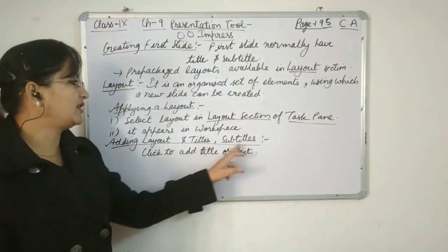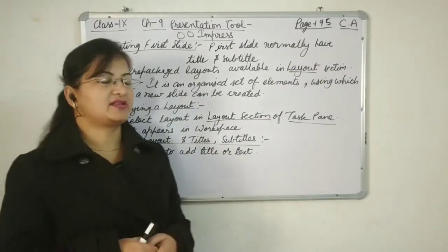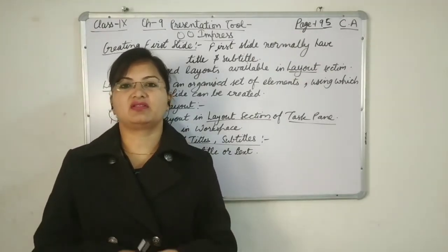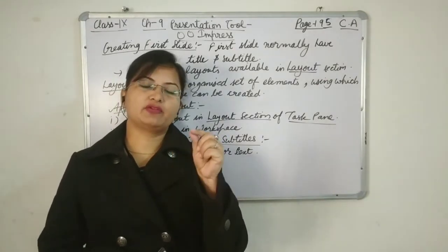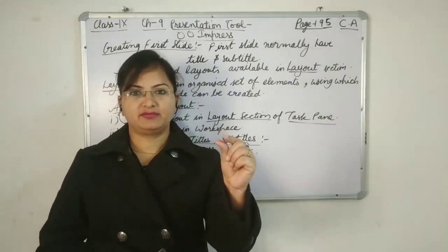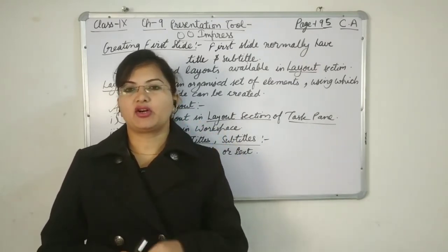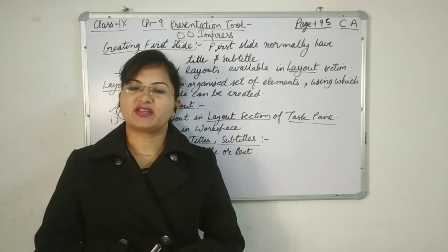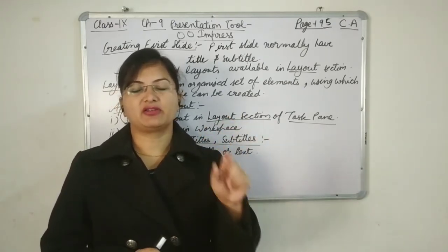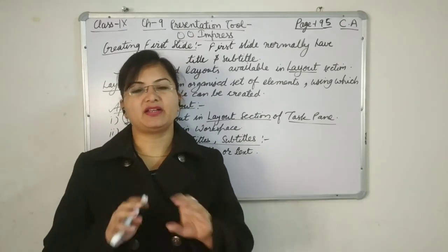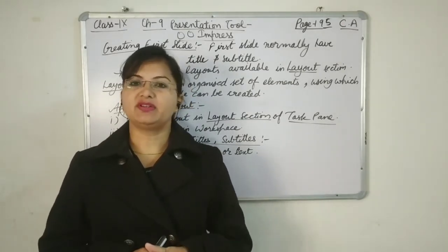Different types of layouts will appear and you can select any layout you want. It will appear in the workspace and you will be able to put content according to the elements. There will be different elements like titles, subtitles, pictures, tables, charts, etc. Small icons appear for pictures, charts, tables, auto shapes — you can click on them to insert the object. For the title and subtitle, double-click inside the text box and the cursor will appear so you can type the content.